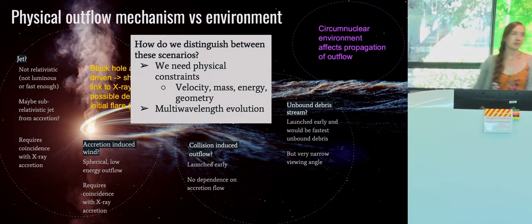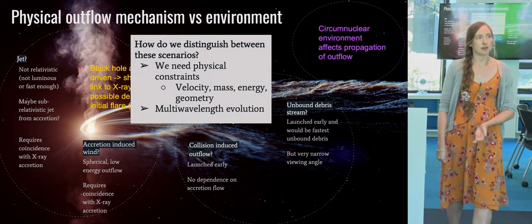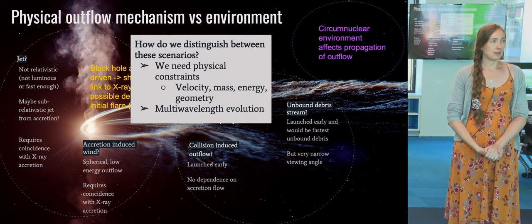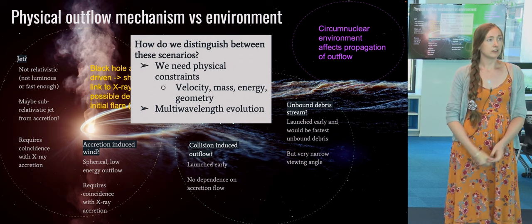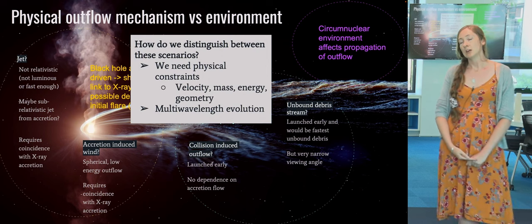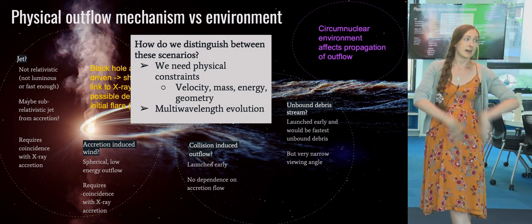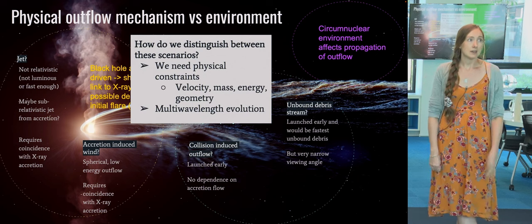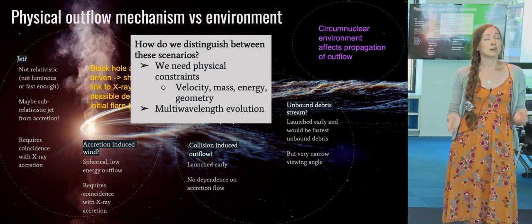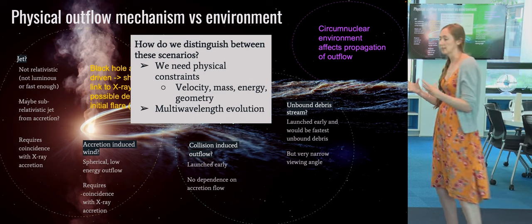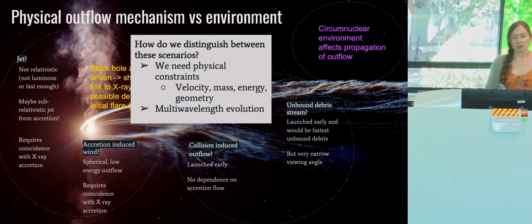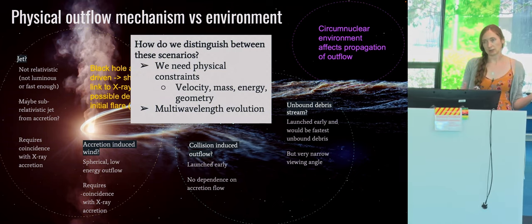So the question is how do we distinguish between these scenarios with our radio observations. We need constraints on the outflow: the velocity, the mass, the energy, and the geometry of the outflow would all give key insights into what is driving them — whether they're very collimated, very fast, slow, or contain a lot or a little mass. Multi-wavelength evolution, such as correlations between radio and X-ray, optical, or UV, also helps.